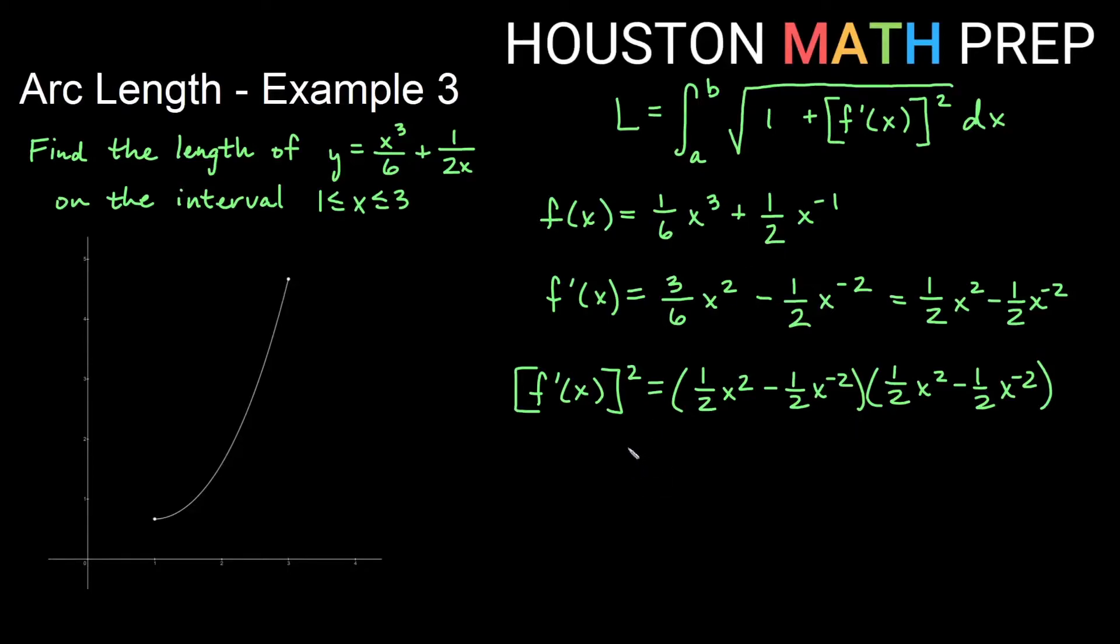If I go ahead and distribute these, I get the first terms. Half times a half would be a fourth. x squared times x squared would be x to the four. And then if I do the outside terms, so I get positive times negative is negative. Half times a half is one fourth. And then x squared times x to the negative two is really x to the zero. And I get a similar thing because these are squares whenever I distribute the inside terms. I get a negative one fourth x to the negative two times x squared is x to the zero.